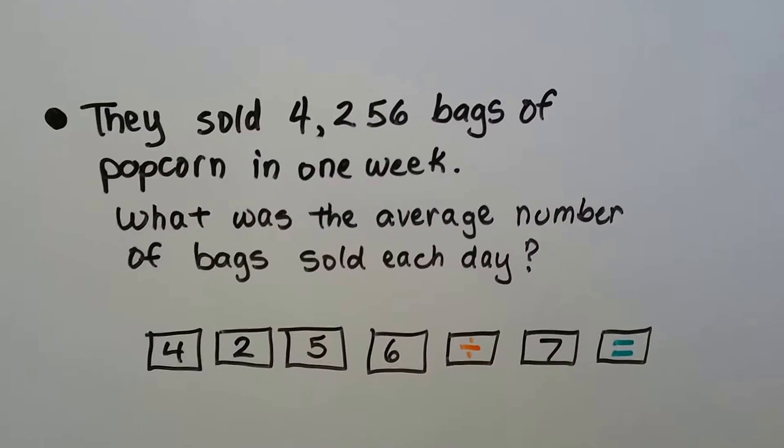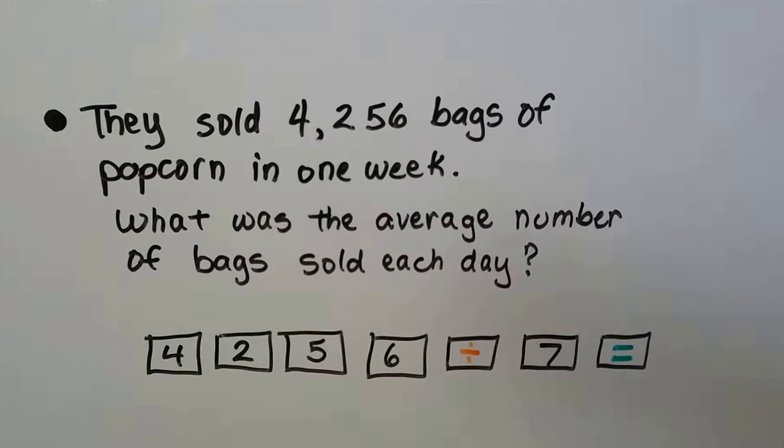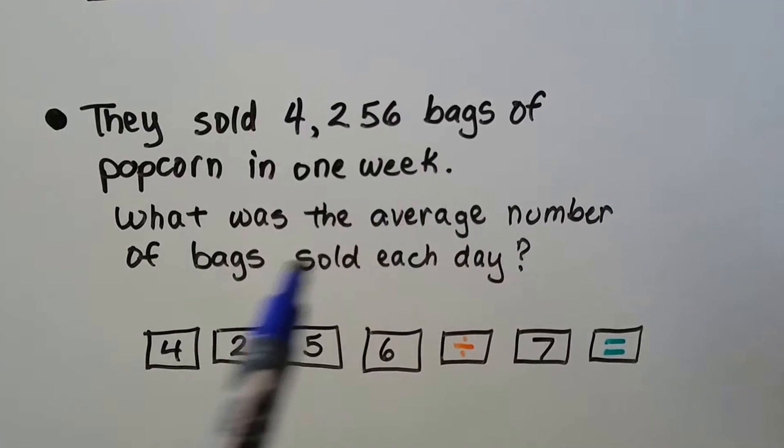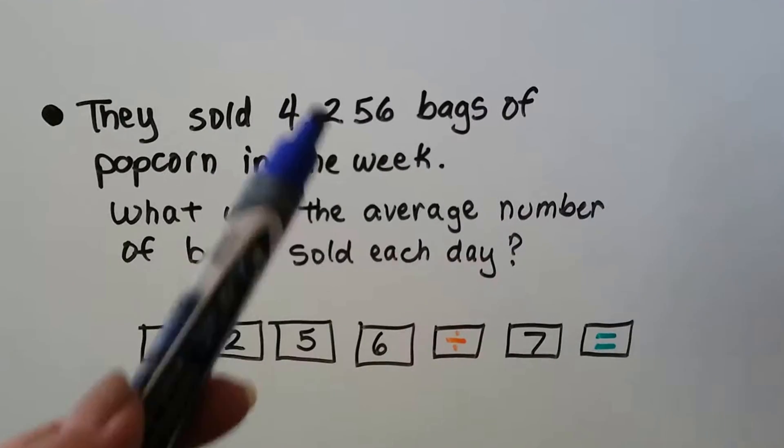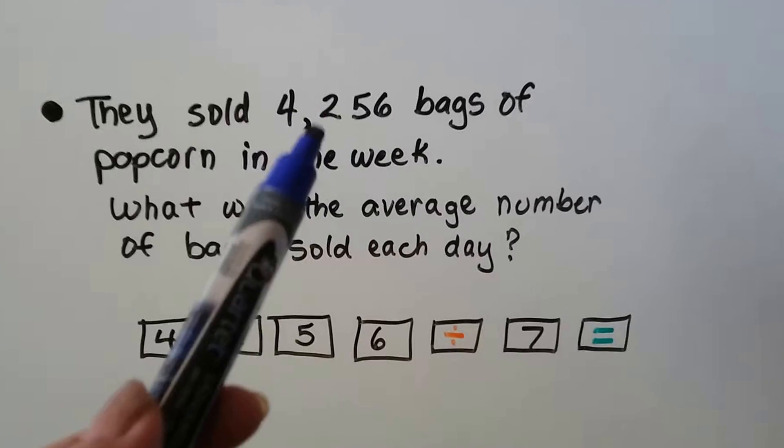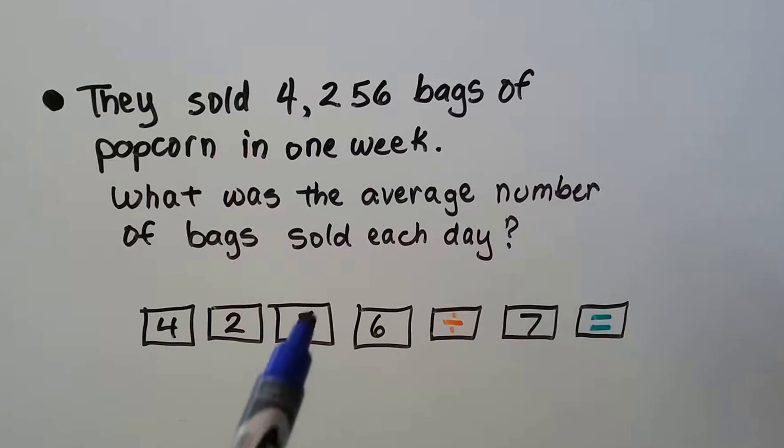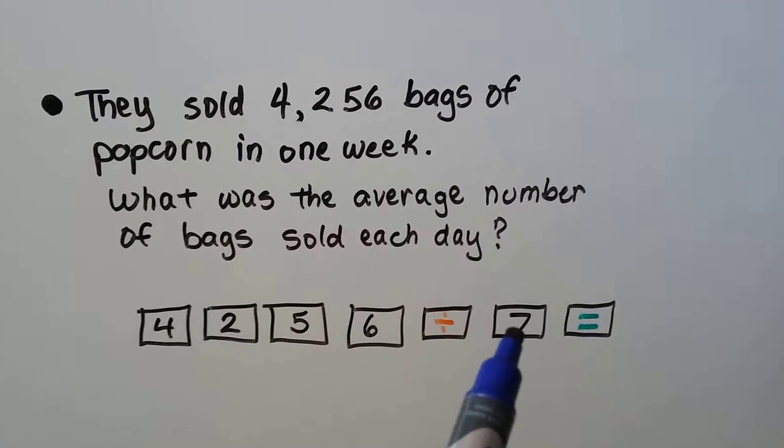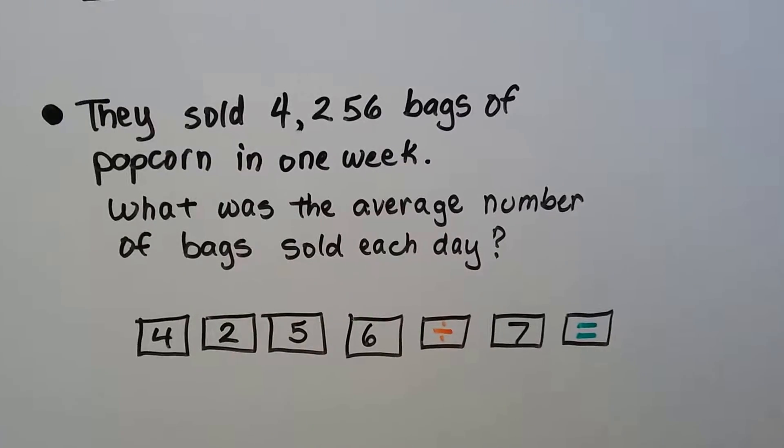They sold 4,256 bags of popcorn in one week. Now, sometimes you're going to see word problems, and you just need to know there's seven days in a week. What was the average number of bags sold each day? That means we need to split this into the days of the week. There's seven days in a week, so we do four, then two, then five, then six. We hit the division key, then the seven for the seven days in the week, and equals, and it'll give us our quotient.